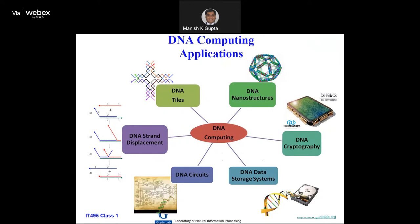There are different application areas in DNA computing. DNA tiles — we have done some work here. It's a bunch of tiles which interact with each other and do computation for you, and these tiles are made of DNA — double crossover or triple crossover DNA molecules. These DNA molecules interact with each other to do any computation you want, because it is Turing-universal. So you can do any kind of thing with this.